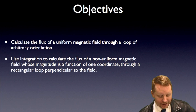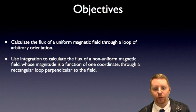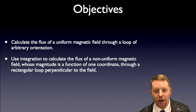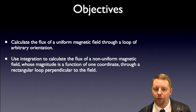Our objectives are to calculate the flux of a uniform magnetic field through a loop of arbitrary orientation and secondly to use integration to calculate the flux of a non-uniform magnetic field whose magnitude is a function of one coordinate through a rectangular loop perpendicular to the field.